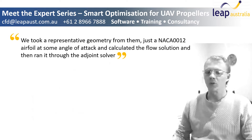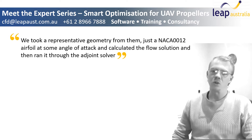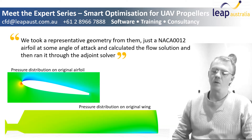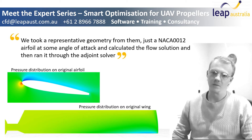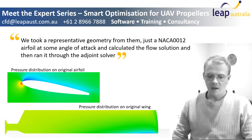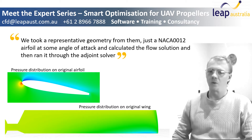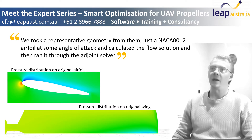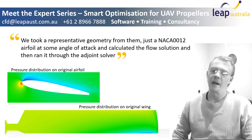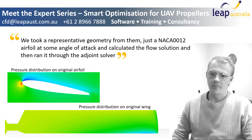We took a representative geometry from them — just a NACA 0012 airfoil at some angle of attack — calculated the flow solution, and then ran it through the adjoint solver.